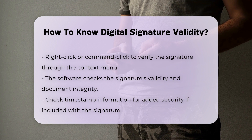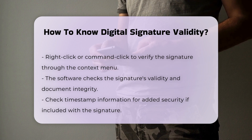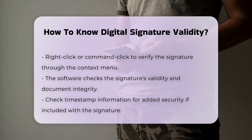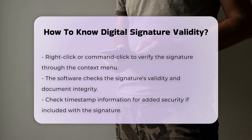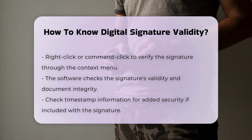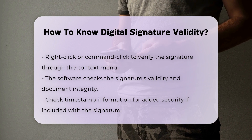Additional Verification. For added security, you can also validate timestamp information if it is included with the signature. This involves checking the Date Time tab in the Validation Status box to ensure the timestamp is verified by a certificate authority.